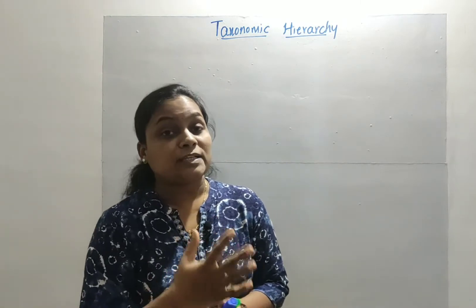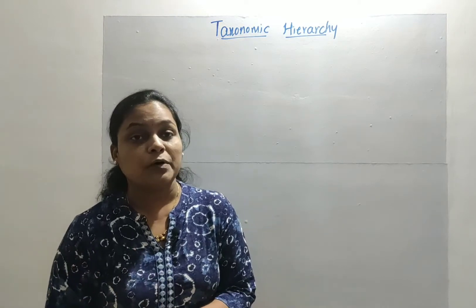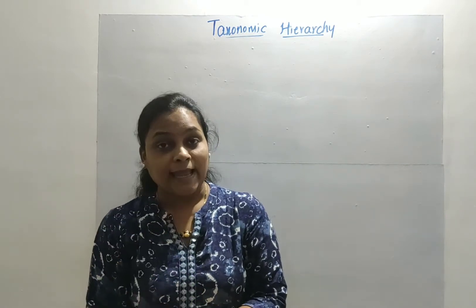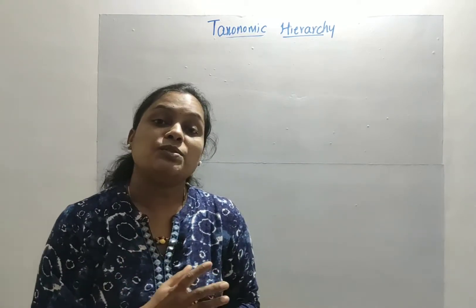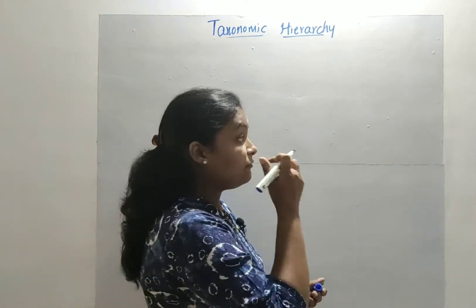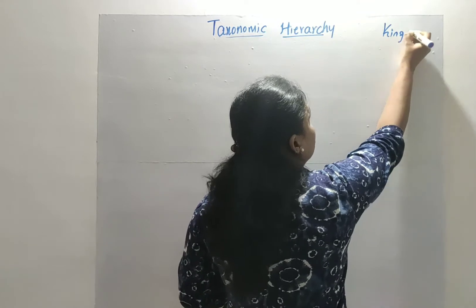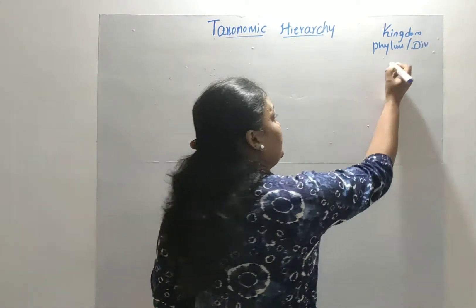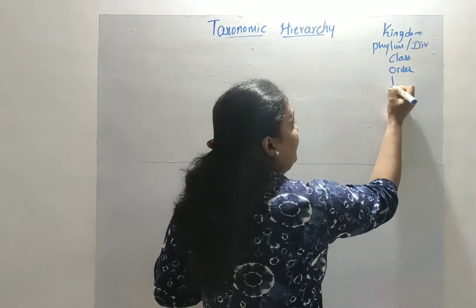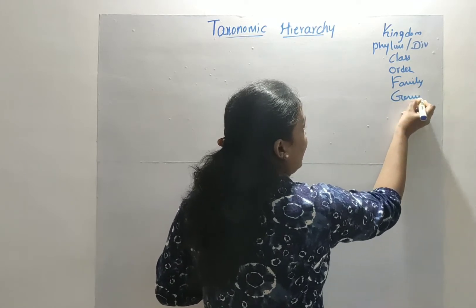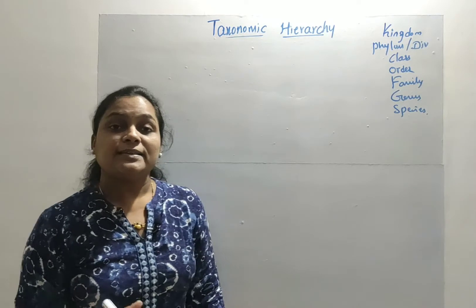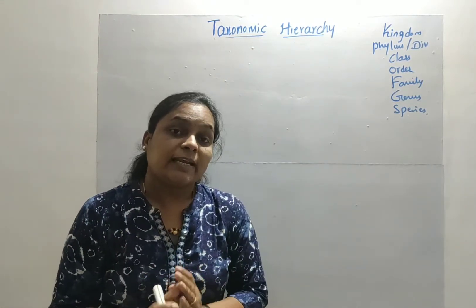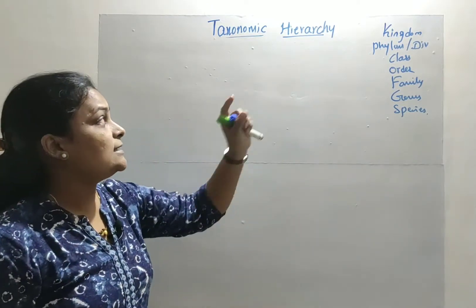I've made a separate video on the taxonomic hierarchy in detail with suitable examples — please check the description box for the related video link. The taxonomic hierarchy is the arrangement of taxonomic categories for organisms, which we use during biological classification. The seven main obligate categories are: Kingdom, Phylum (also referred to as Division), Class, Order, Family, Genus, and Species.